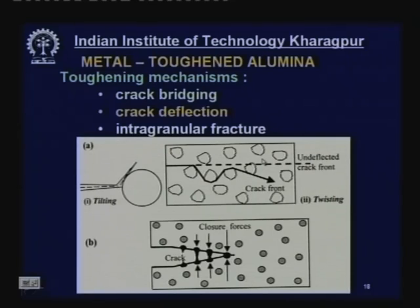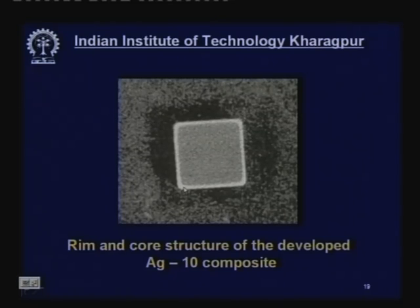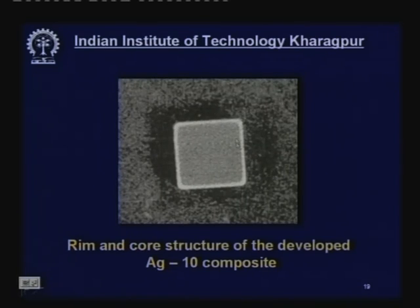An actual silver-toughened alumina cutting tool shows white outer periphery of pure alumina — providing abrasion resistance and heat resistance at the surface — and a black interior due to the presence of silver, which provides toughness and bulk strength at the core. This is a very effective combination where the outer surface gives coating-like properties and the core provides the necessary toughness.